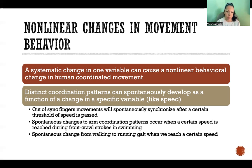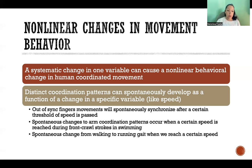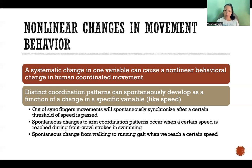Here are a few examples in movement behavior. Out-of-sync fingers that are moving will spontaneously synchronize after a certain threshold of speed is passed. Another example is spontaneous changes to arm coordination patterns during swimming — in front crawl strokes, there can be a change in synchronization that occurs when a certain speed threshold is reached. And finally, there's a spontaneous change from walking to running gait when we reach a certain speed, a transition from one phase to another.